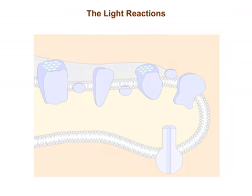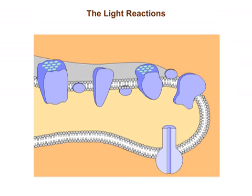The light reactions are the steps in photosynthesis that occur on the thylakoid membranes of the chloroplast and that convert solar energy to the chemical energy of ATP and NADPH, evolving oxygen in the process.